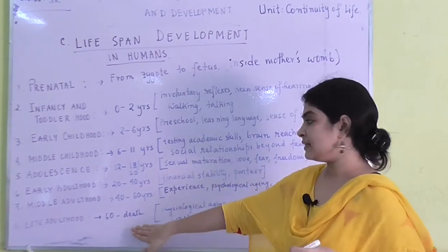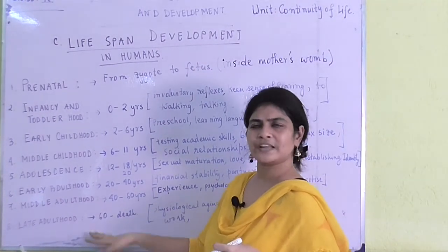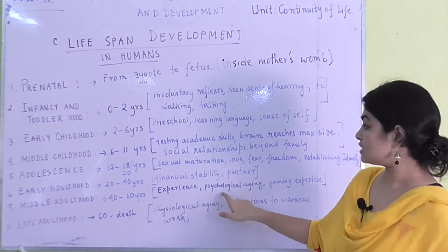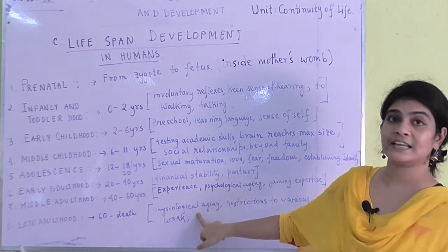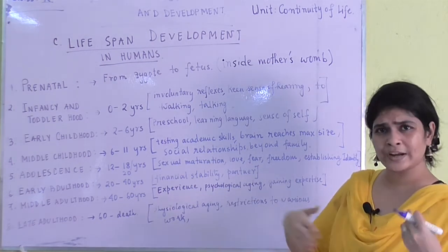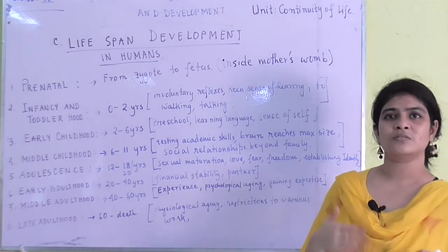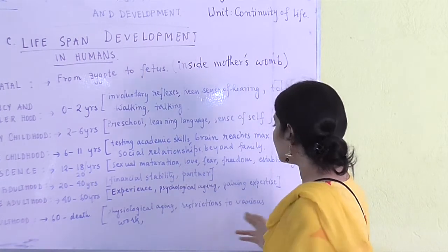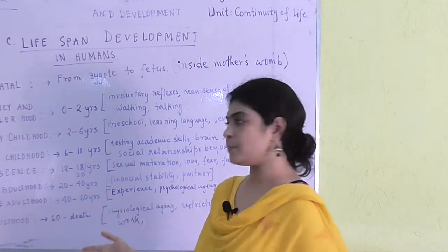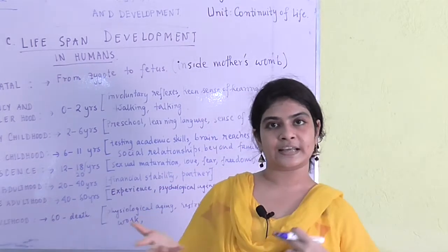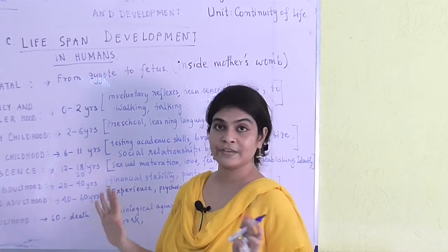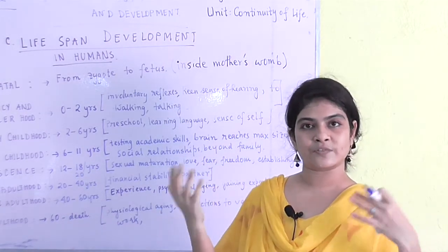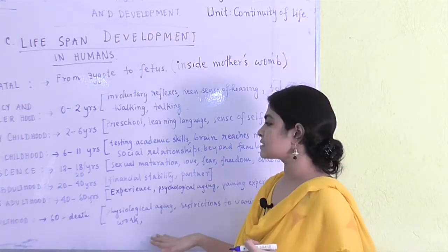The last stage is late adulthood, which includes sixty years of age till death. Physiological aging comes in during this phase — organs start becoming weak. There are restrictions to various types of work. While some people remain fit, most have different kinds of diseases and health issues at this age.